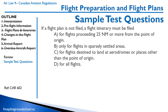Question one: if a flight plan is not filed, the flight itinerary must be filed — A, for flights exceeding 25 nautical miles or more from the point of origin; B, only for flights in sparsely settled areas; C, for flights destined to land at aerodromes or places other than the points of origin; D, for all flights. You should know it's 25 nautical miles, as we just discussed — so the answer is A.